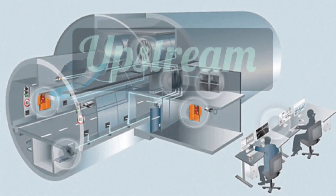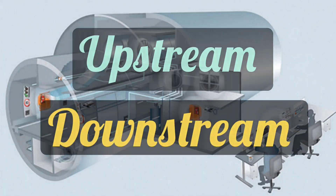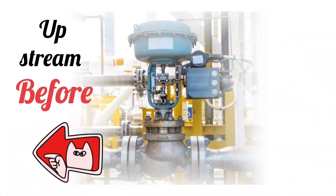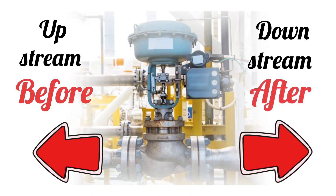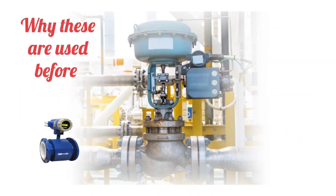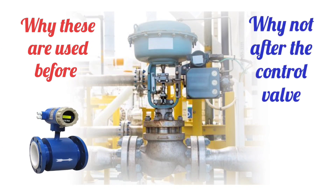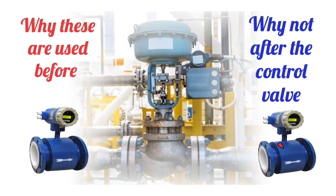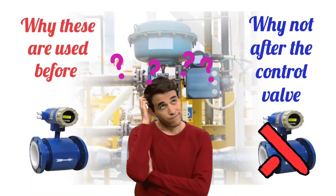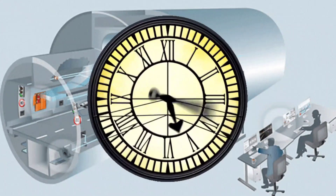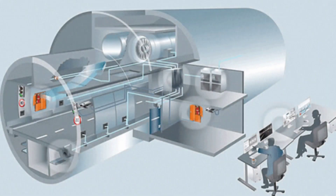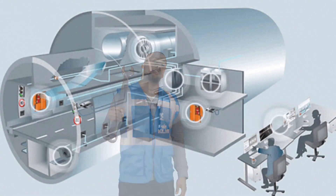Let us first look at upstream and downstream. Upstream means before, and downstream means after. But the question here is: why is the flow meter installed before the control valve, and why not after? Let's take a quick overview of which instruments are used for flow measurement.